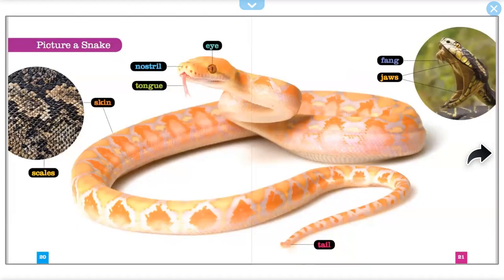Picture a snake: nostril, tongue, skin, scales, tail, fang, jaw, eye.